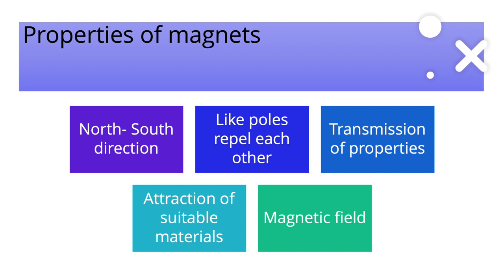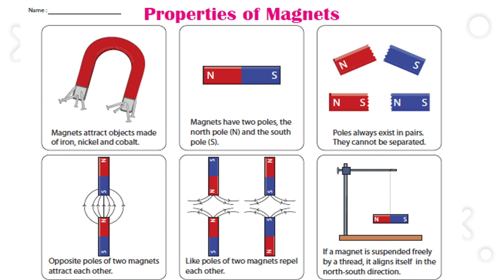Looking at a diagram illustrating magnet properties: magnets attract objects made of iron, nickel, etc. Poles always exist in pairs and cannot be separated — north and south always exist together. Opposite poles attract each other and same poles repel each other. If a magnet is suspended freely by a thread, it always aligns in the north-south direction — that is why magnets were historically used for navigation and sailing.